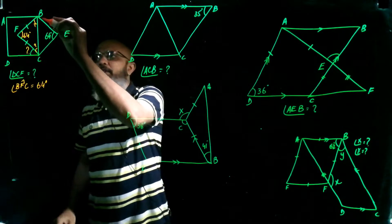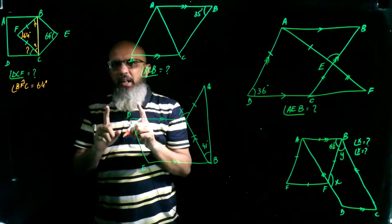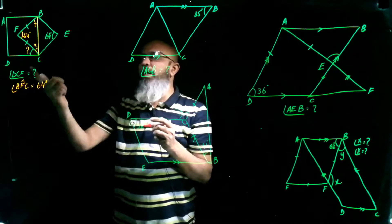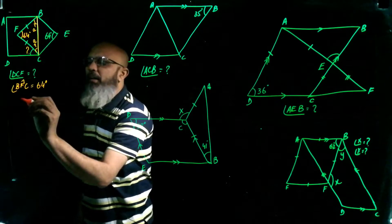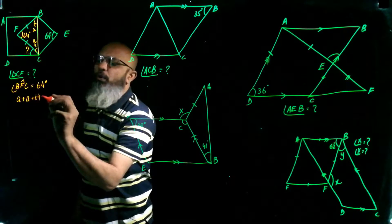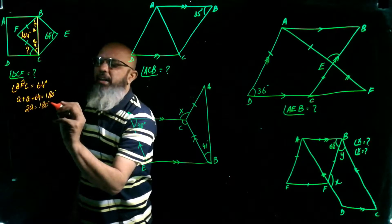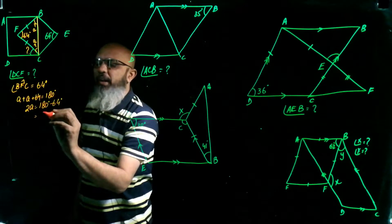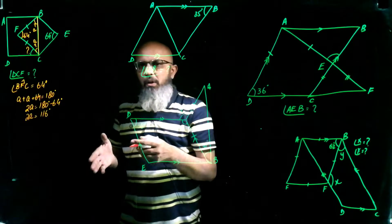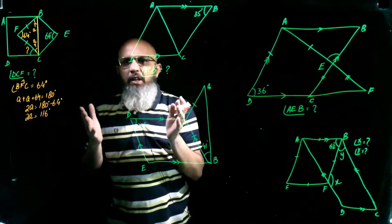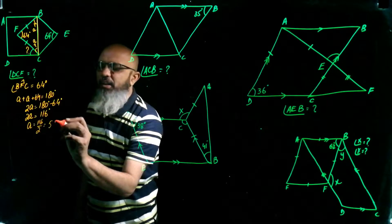Consider triangle BFC. The sum of angles in a triangle is 180 degrees. Naming the two equal unknown angles as A, the equation is: A + A + 64 = 180. So 2A = 180 - 64 = 116. Dividing by 2, angle A = 116 ÷ 2 = 58 degrees.